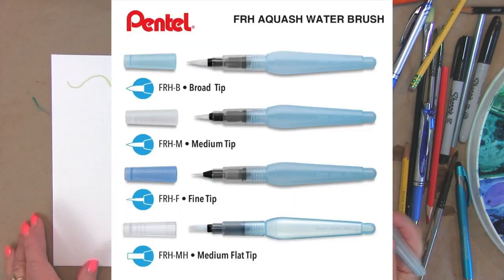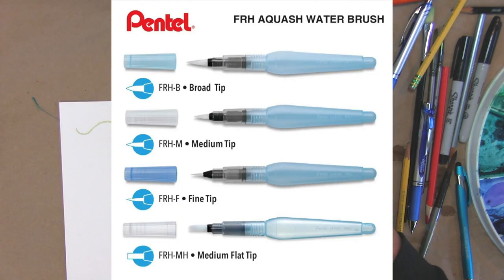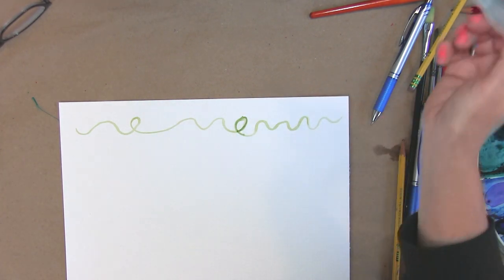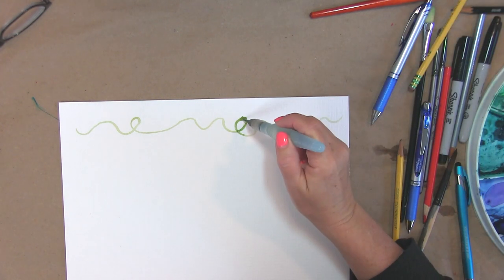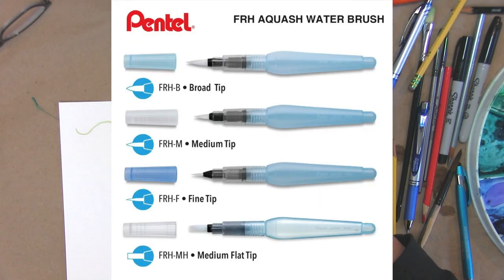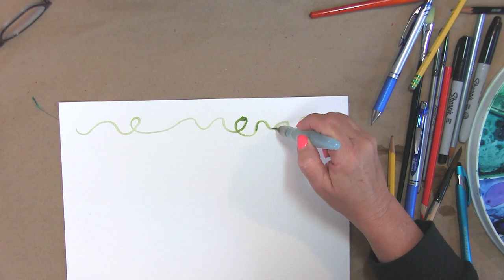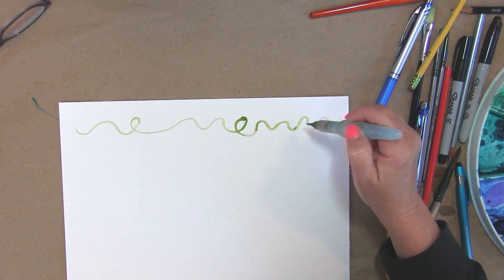The one I'm painting with right now is called a Pentel water brush. It's a really cool brush. You open it up and you can put water in the actual barrel of the brush. Brushes come in different sizes, and the one I'm using is the fine point brush, but I don't know if that's going to be the best brush for my flower borders.